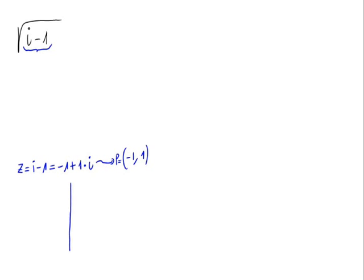Let's draw the point. On the x-axis we have 1 and minus 1, and on the y-axis we have 1 and minus 1. Our point is at minus 1 on the x-axis and 1 on the y-axis. This gives us its vector.